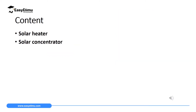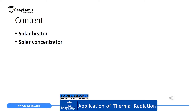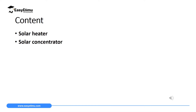By the end of this lesson, I expect you to be able to describe how a solar heater utilizes the idea of radiant heat, especially in absorption and emission, to heat up substances like water. We are also going to discuss how a solar concentrator uses the idea that radiant heat can be refracted and converged from the sun to heat substances at the point of focus.